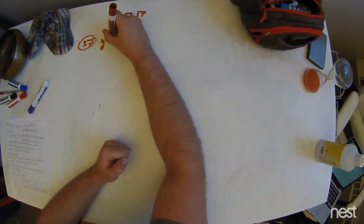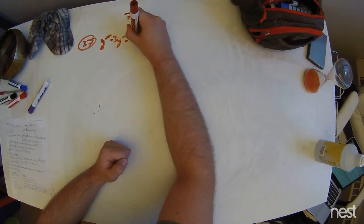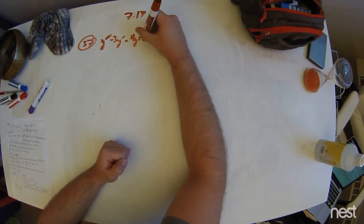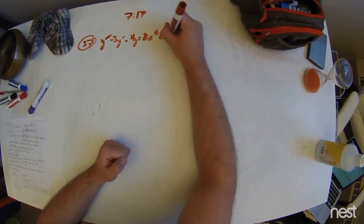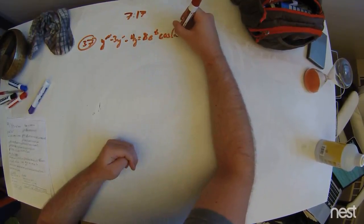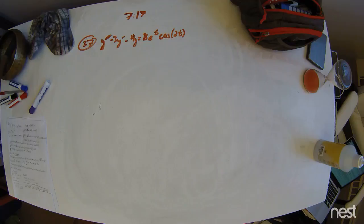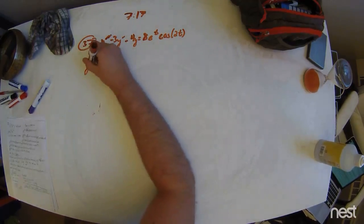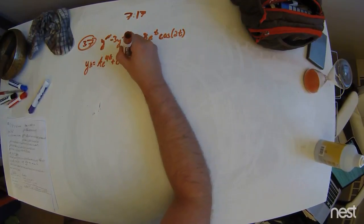y double prime minus 3y prime minus 4y equals 8e to the t times cosine of 2t. Now, from the previous problems, we know y homogeneous is equal to ae to the 4t plus be to the minus t.